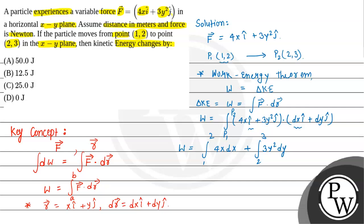Now we integrate. 4x dx integrated gives 4x² divided by 2, with limits 1 to 2, plus 3y² integrated gives 3y³ divided by 3, with limits 2 to 3. This will be in Joules.